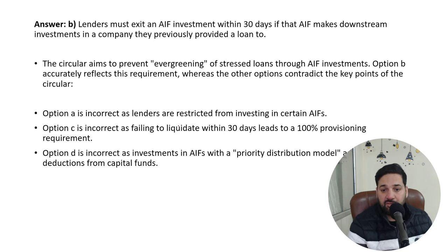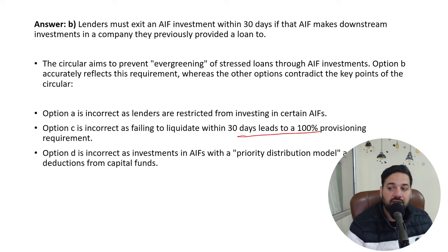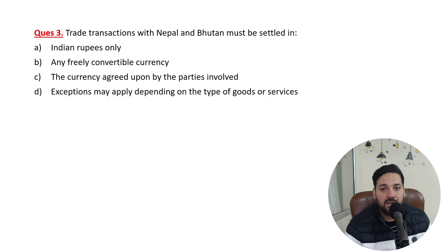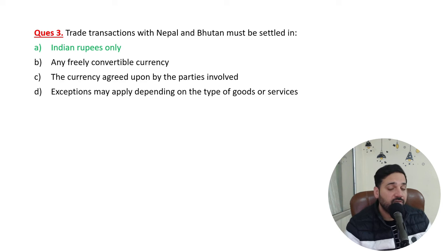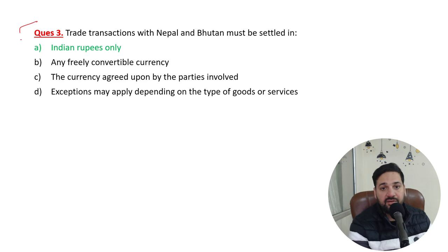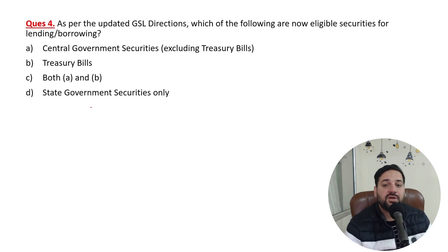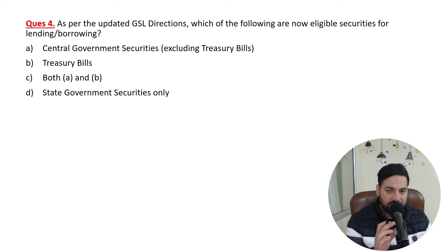If lenders are unable to liquidate within 30 days, they need to create a 100 percent provision. Regarding trade transactions with Nepal and Bhutan: as per a recent RBI circular, all trade transactions with Nepal and Bhutan must be settled in Indian Rupees only.